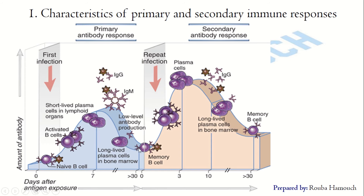After the first infection, memory B lymphocytes are produced. These memory B lymphocytes act upon second infection with the same antigen — they differentiate and give a large number of plasma cells secreting antibodies. That is why the level of antibodies produced in the secondary response is much higher than that produced in the primary response to the same antigen.